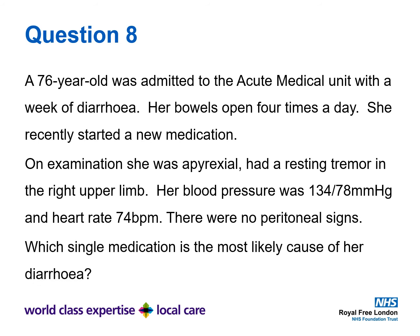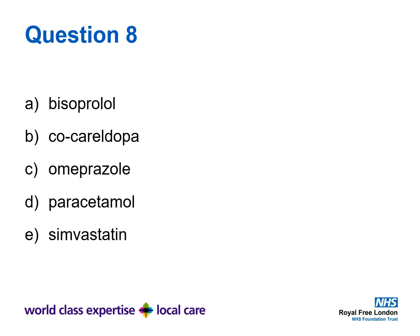Question 8. A 76 year old was admitted to the acute medical unit with a week of diarrhoea. Her bowels open four times a day. She recently started a new medication. On examination, she was apyrexial, had a resting tremor in the right upper limb. Blood pressure was 134 over 78 with a heart rate of 74, and there were no peritoneal signs. Which single medication is the most likely cause of her diarrhoea? A: Bisoprolol, B: co-careldopa, C: omeprazole, D: paracetamol, or E: simvastatin.